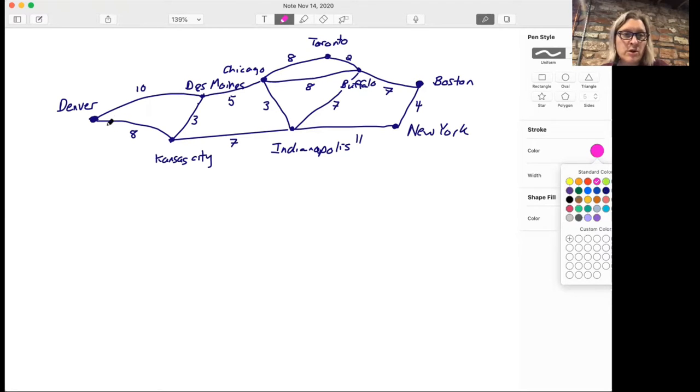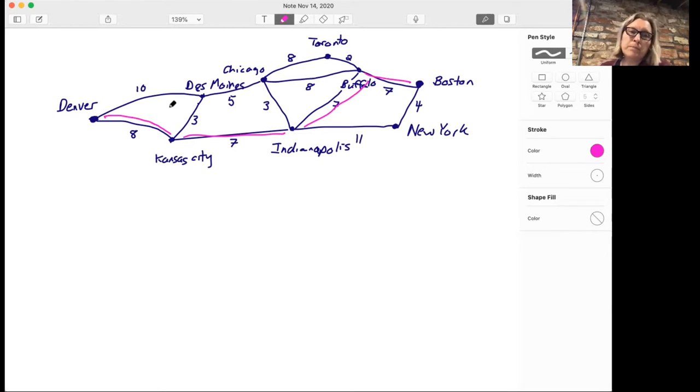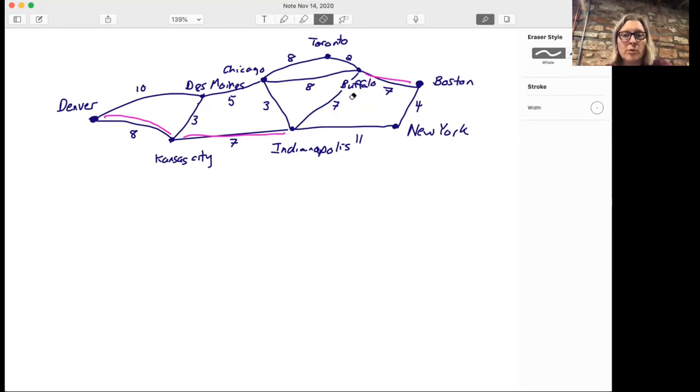So I just solved my optimization problem, which is to go to Kansas City, then Indianapolis, then Buffalo, and then Boston. In general, what we've changed here is that we have a graph, and now each edge has a weighting, which in this case represents the number of hours in the car, but could also represent something like the number of tolls or the quality of the public radio stations. We want to find a path from Denver to Boston that minimizes or maximizes the sum of those edge weightings.